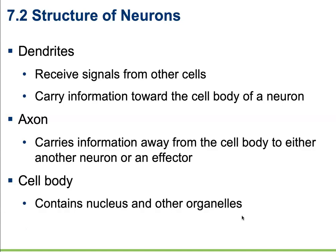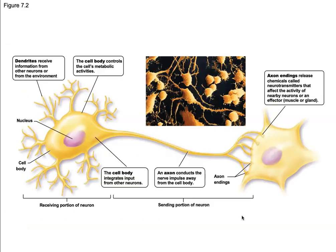The cell body is going to make up the bulk of the cell volume-wise. This is where we're going to house our nucleus and all of the organelles that a cell needs to maintain its normal function. Its function is to maintain that neuron.